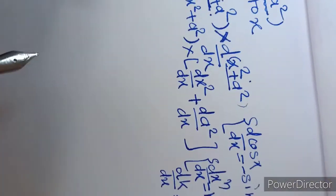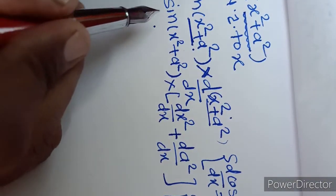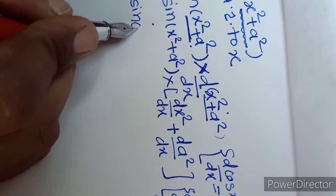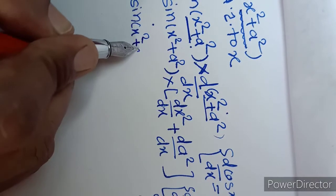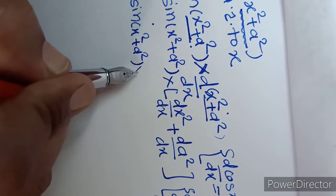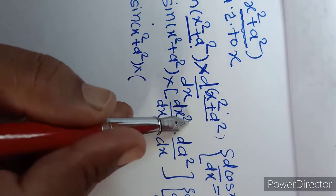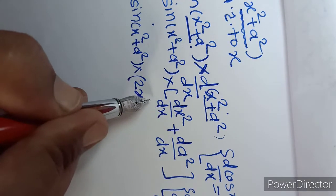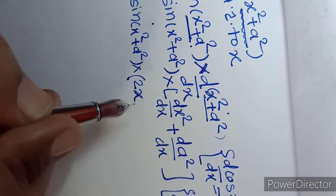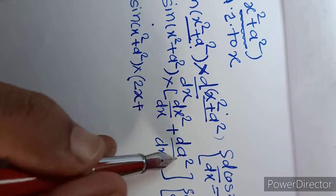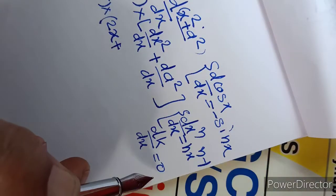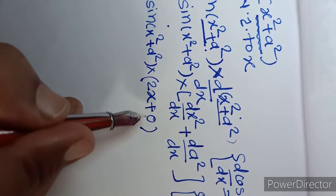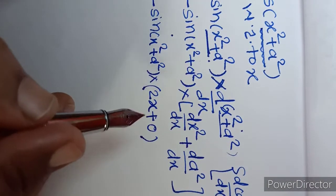We apply both formulae at this step. We write minus sin of (x² + a²) as it is, then multiply by the derivative: n = 2, so 2 into x raise to 2 minus 1, which gives 2x. Plus the derivative of the constant a², which is 0. So 2x + 0 = 2x.